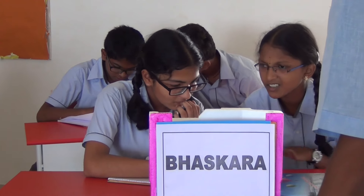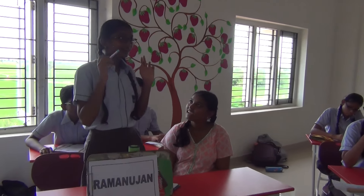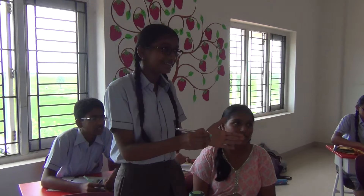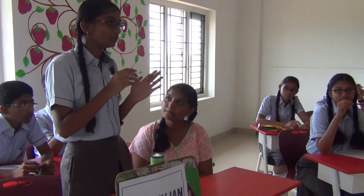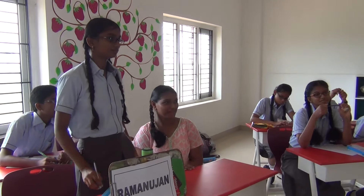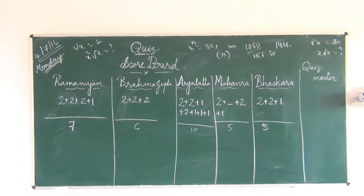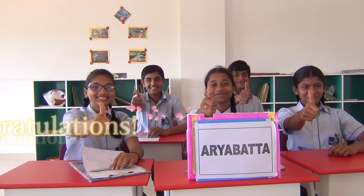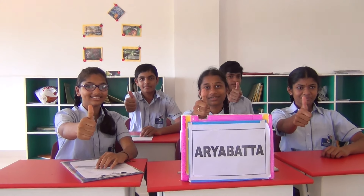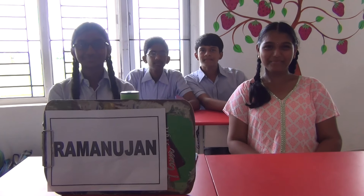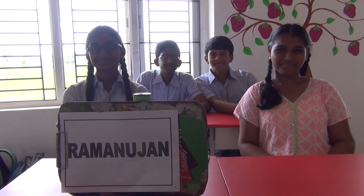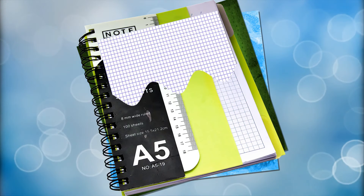Statement of Euclid's division lemma: for positive integers, A equals BQ plus R, where R is greater than or equal to 0 and less than B. Very good. The winner of this quiz is Arya Malta. Thank you.